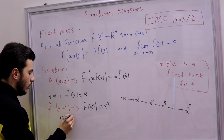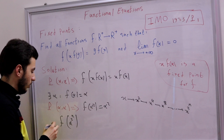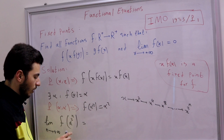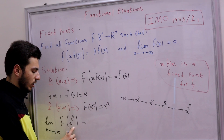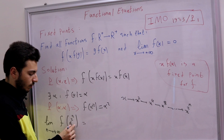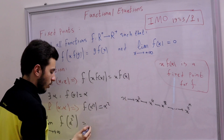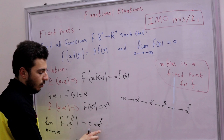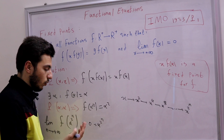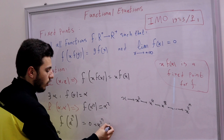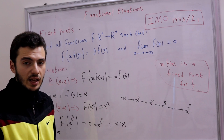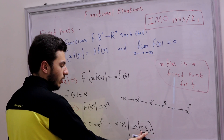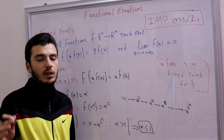Now consider f(α^(2^n)) as n approaches infinity. Since α^(2^n) is a fixed point, f(α^(2^n)) = α^(2^n). If α > 1, then α^(2^n) → +∞, and by our limit condition f approaches 0. But f(α^(2^n)) = α^(2^n) → +∞ ≠ 0 — a contradiction. So α cannot be greater than 1, meaning every fixed point α satisfies α ≤ 1.